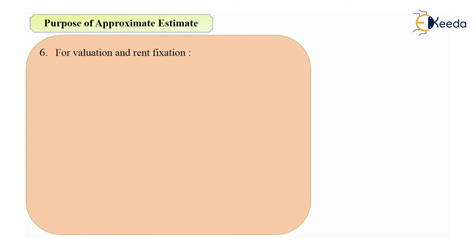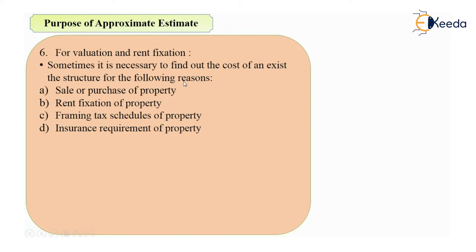Approximate estimate is also used for valuation and rent fixation. To value a building, you check two things: the cost of the plot or land in that locality per square foot or per meter square, and the cost of construction on that day in that locality. From those figures you can value your building — that is nothing but valuation. It is also very necessary to find out the cost of an existing structure for purposes such as sale or purchase of property, rent fixation, taxation, or insurance.